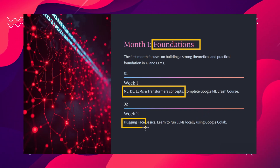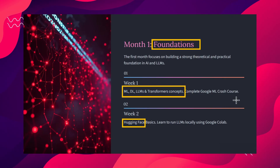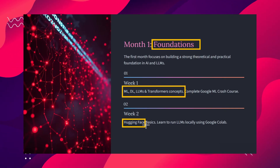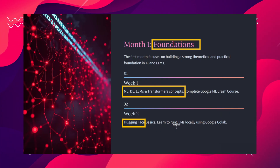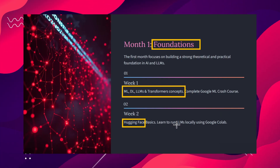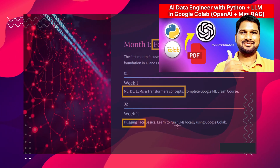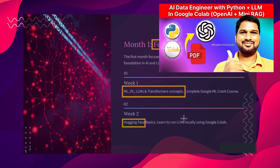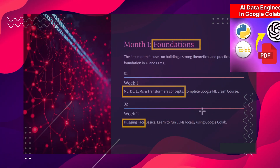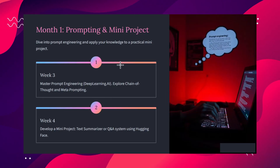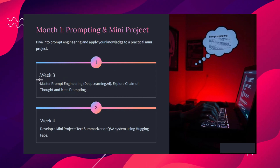In week two, we need to understand Hugging Face, one of the most popular frameworks in the AI world. We'll learn how to use the Transformers library, how to set up LLMs locally or using Google Colab. I've already made a video on how to set up an LLM in Google Colab — you can refer to that via the icon on screen. It's very simple and easy.